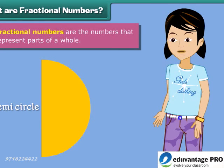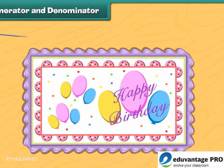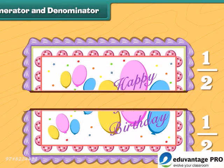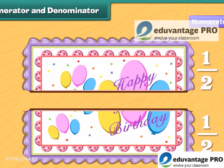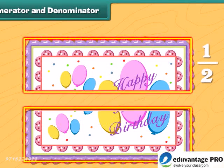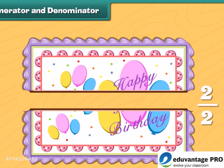Fractional numbers are the numbers that represent parts of a whole. Here is a whole birthday cake. Let's cut it into small pieces. If we cut the cake from the middle, we get two equal size pieces. Each piece is one half of the whole cake. We can write that as a fraction. The bottom number, called the denominator, tells us the total number of pieces that make up one whole. The top number is called the numerator, which shows the number of parts. So this is one half of the cake, and these are two halves of the cake. Two divided by two is one — that is, one whole cake.